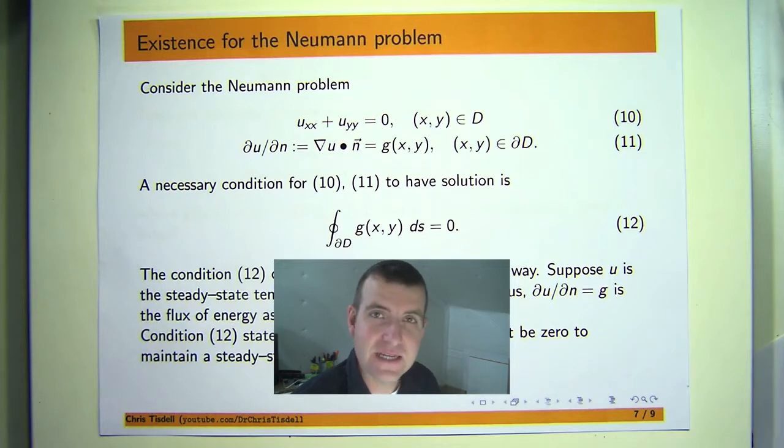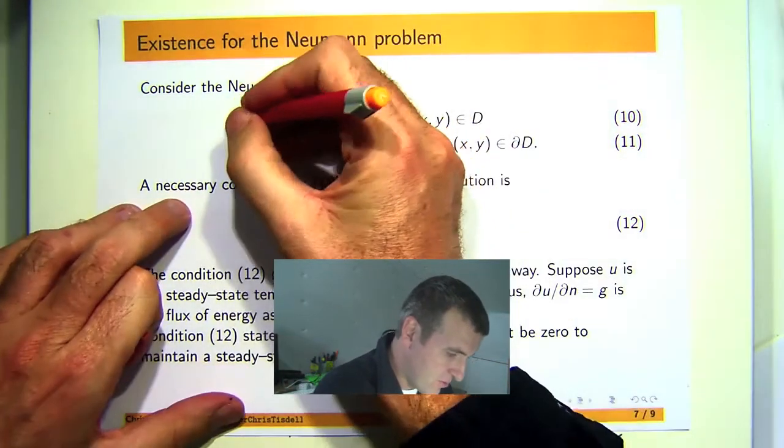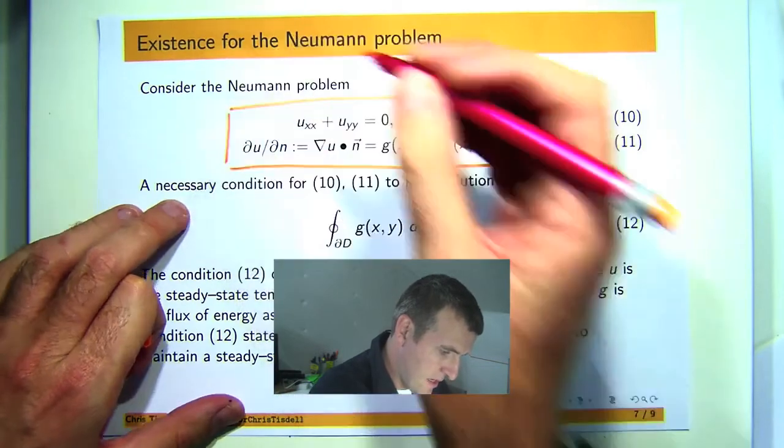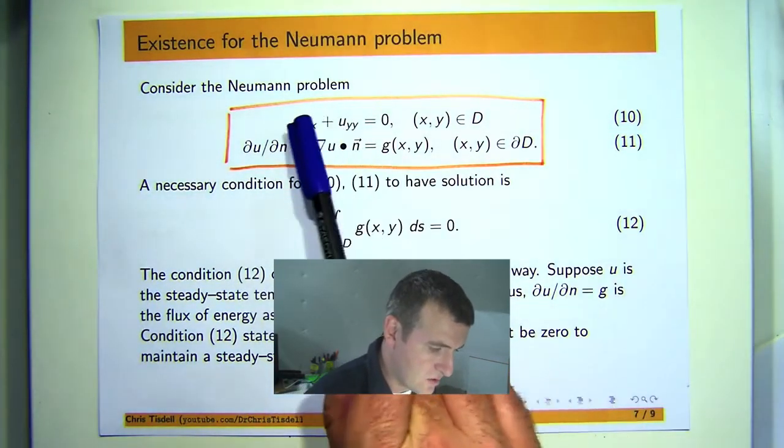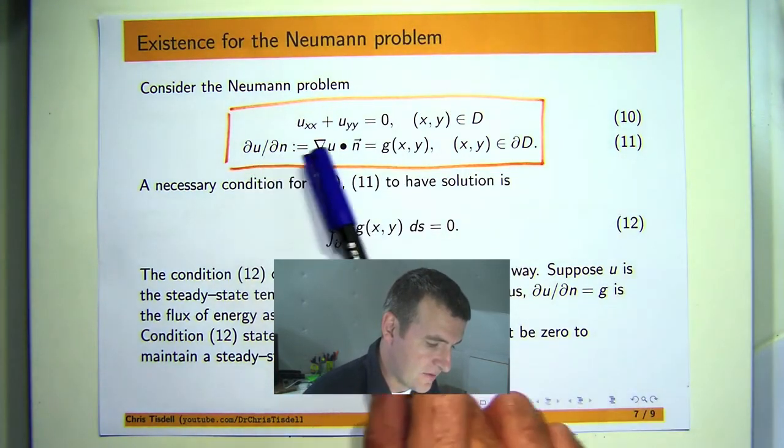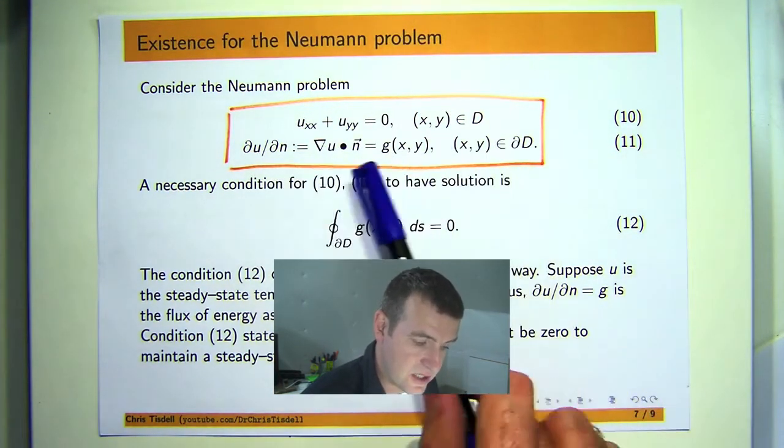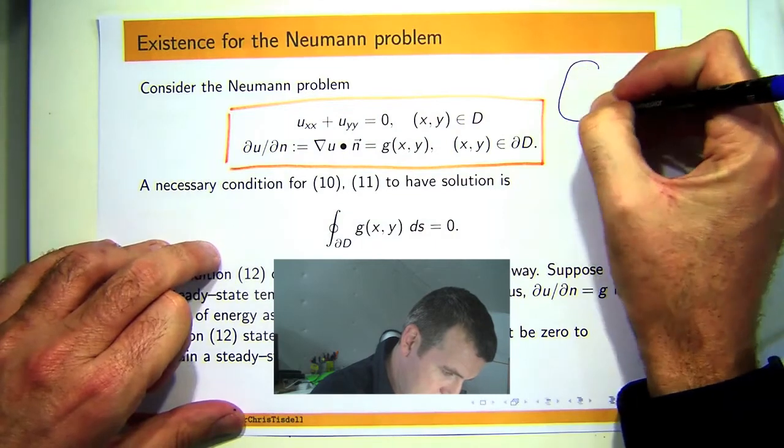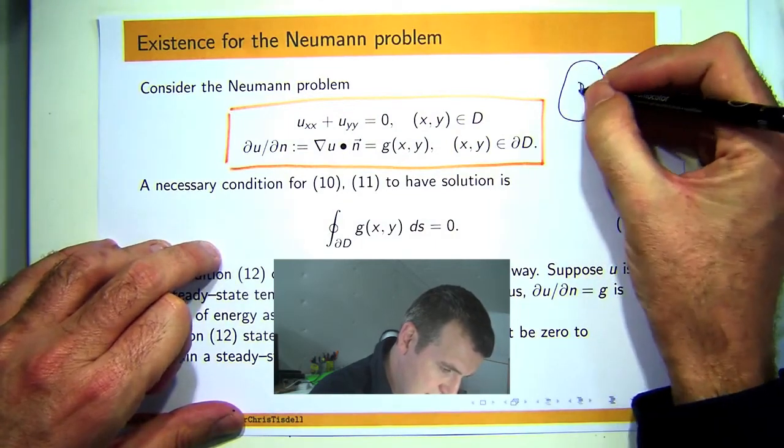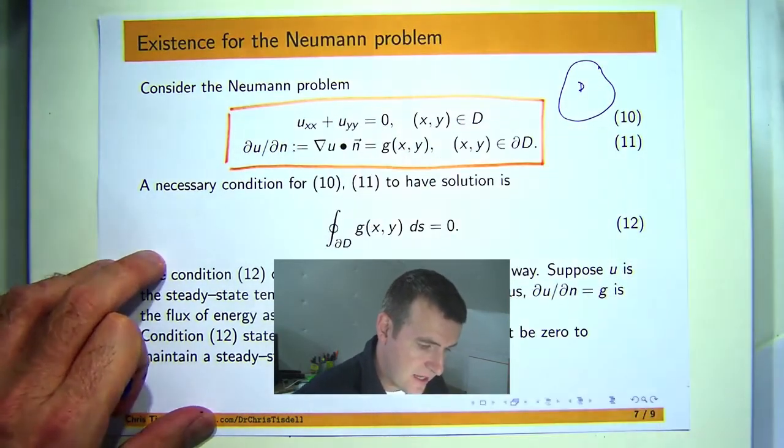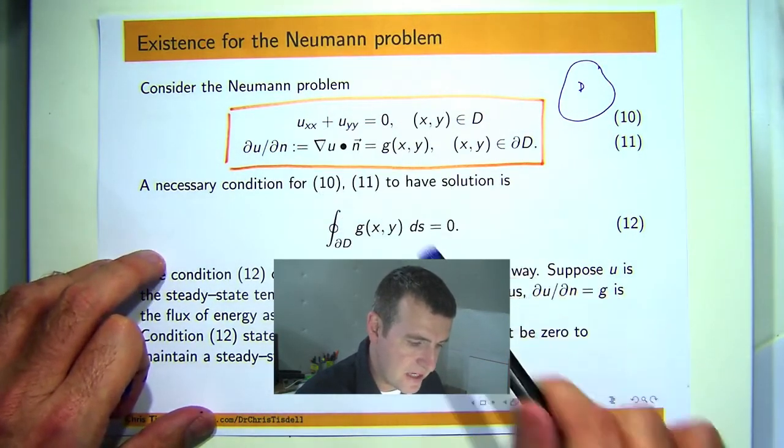Now in this particular presentation we're going to be interested in the following problem. You've got a second order partial differential equation here known as Laplace's equation. And you've got some extra condition known as a boundary condition. So essentially you've got some two-dimensional set D. Inside that set this PDE holds and on the boundary you have this extra condition.